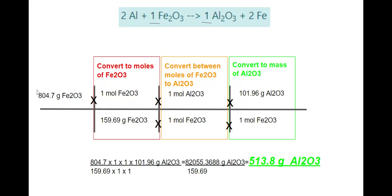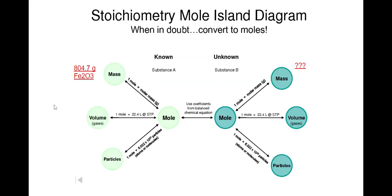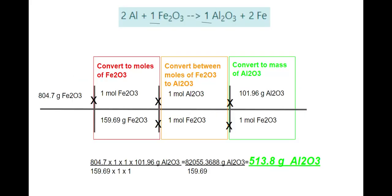You have your given 804.70 grams of Fe2O3. First, you need to convert that into moles of Fe2O3. That's the first thing you should do. Always go into moles. So the molar mass of iron(III) oxide is 159.69 grams. So you will convert into that. One mole Fe2O3 is 159.69 grams Fe2O3, that's converting to moles. So that was the first step of this diagram.